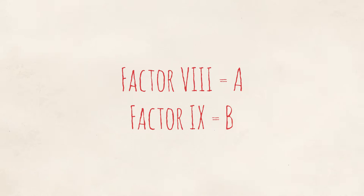Each person with hemophilia is missing one of two kinds of factors. If you're missing factor VIII, you have hemophilia A. If you're missing factor IX, you have hemophilia B.